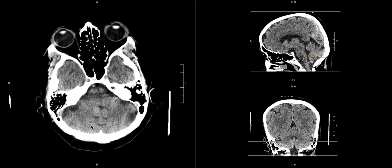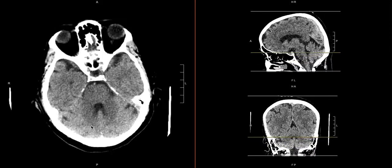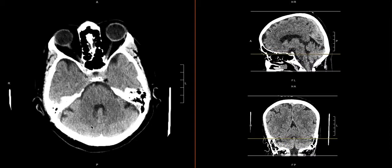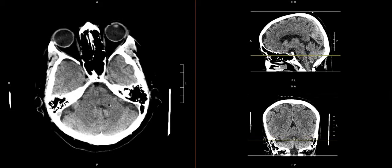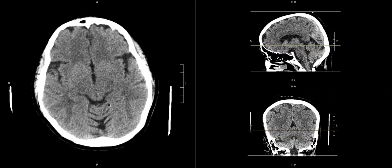Now we're going to move up to the pontine level. An easy way to tell where we are — we can also look at our sagittal view — but you'll see the fourth ventricle here, which can either be flattened or have a lampshade-like appearance. We're going to look at the pre-pontine cistern and the fourth ventricle to see if there's any blood in the cistern or ventricle, and appreciate the pons itself — looking for hypodensities or areas suggesting bleeding.